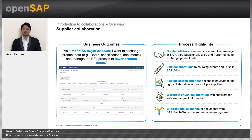Next is supplier collaboration. The business outcome states that as a technical buyer or a seller, I want to exchange product data such as bill of materials, specifications, documents and managing the RFX process to lower product cost. The process highlights are creating collaborations and inviting suppliers managed in SAP Ariba SLP to exchange product data, linking collaboration to sourcing events and RFX in SAP Ariba, flexible search and filter options to navigate to the right collaboration across multiple suppliers, workflow-driven collaboration with suppliers for safe exchange of information, and bidirectional exchange of documents from SAP S/4HANA document management system into EPD.